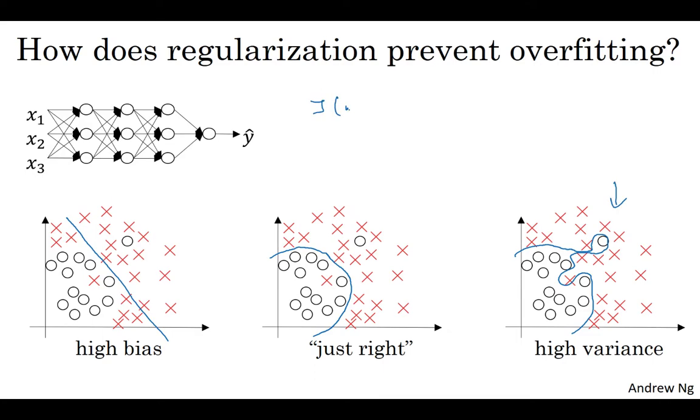So you have some cost function J of W B equals sum of the losses. And what we did for regularization was add this extra term that penalizes the weight matrices from being too large. We said that was a Frobenius norm. So why is it that shrinking the L2 norm or the Frobenius norm with the parameters might cause less overfitting?